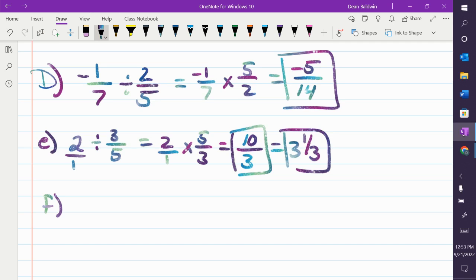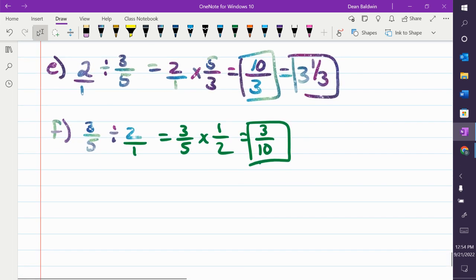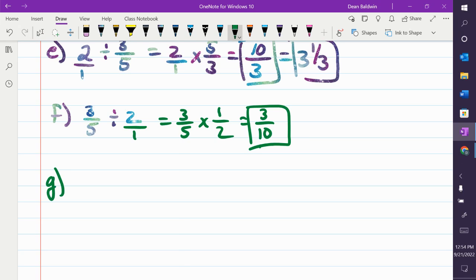What if I did this? So, I changed the order. I rewrote it as 3 fifths divided by 2. So, the 2 written as a fraction is what? 2 over 1. First fraction stays the same. Change to a multiplication. Flip the second fraction now, which is 1 half. And then multiply across. 3 over 10. You okay?